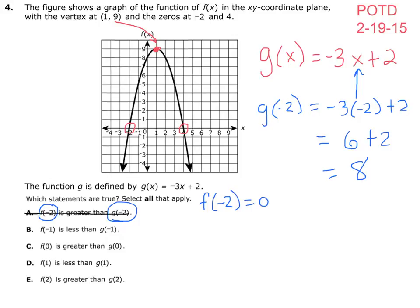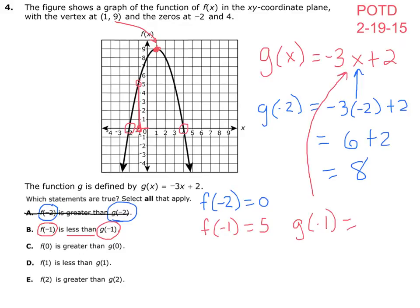Let's look at B. Let's calculate f of negative 1 and see if it's less than g of negative 1. When x is negative 1, y is all the way up here at 5, so f of negative 1 is 5. For g of negative 1: negative 3 times negative 1, which is 3, plus 2 is also 5. The statement says f of negative 1 is less than g of negative 1 — but they're both equal — so B is also false.